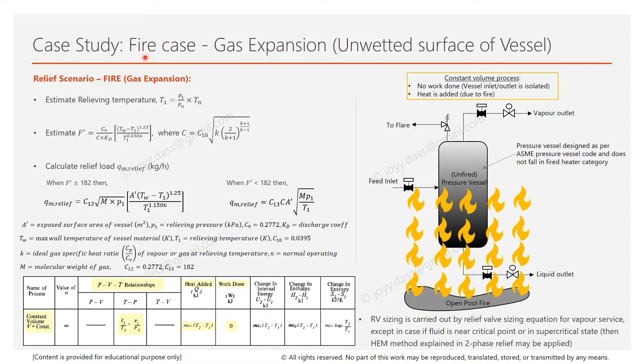Case study: fire case, gas expansion. Gas expansion fire case is also termed as unwetted surface of vessel. Here in this picture we can see there's a liquid spill which has ignited and caused a pool fire. During a pool fire, the fire and gas detection has detected the fire and activated emergency shutdown of the plant, due to which inlet and outlet shutdown valves have closed.